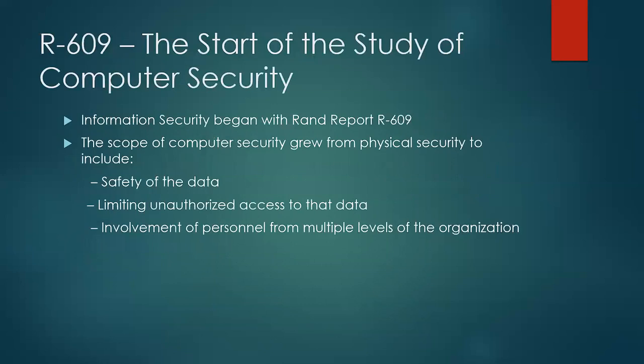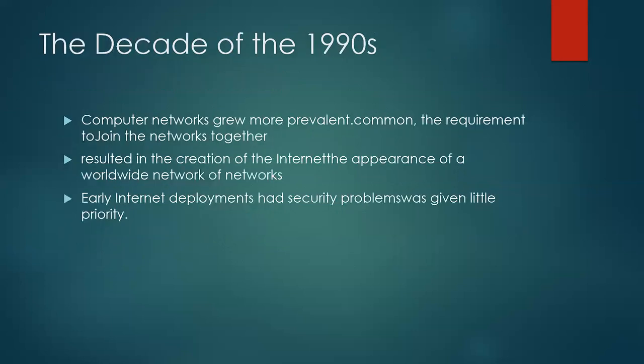Information security began with the RAND Report R609, which marked the start of the study of computer security. The scope of computer security grew beyond physical security to include safety of data, limiting unauthorized access to data, and the involvement of personnel from multiple levels of the organization.